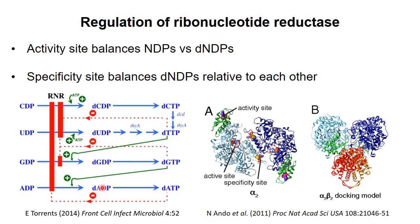Then, when deoxy ATP accumulates, it will displace ATP from the activity site and inhibit the enzyme. Thus, all four deoxynucleotides are synthesized in a controlled way that keeps their concentrations in balance for DNA synthesis.